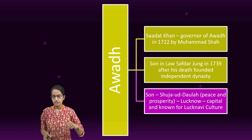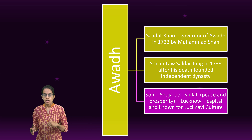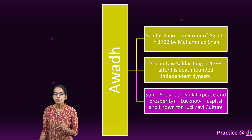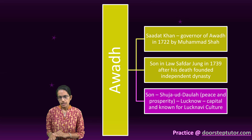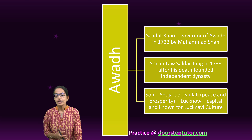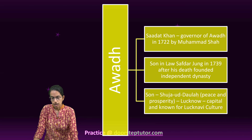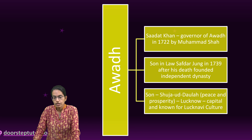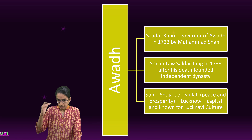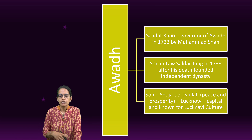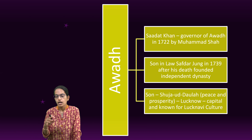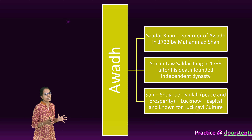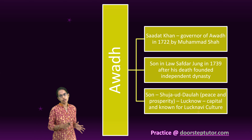However, his son-in-law Saadat Jang was in power in 1739. After his death, an independent dynasty was established. The son of Saadat Jang — Shuja-ud-Daula — was the one who established the most important developments in the region of Awad.